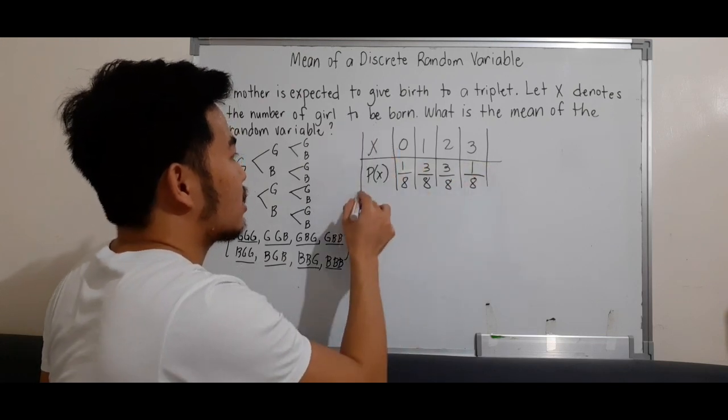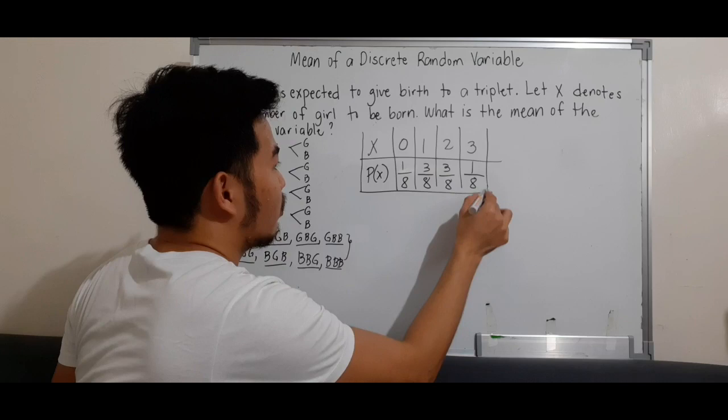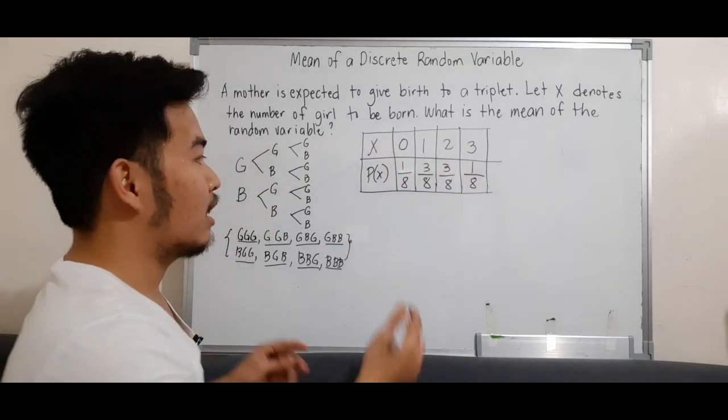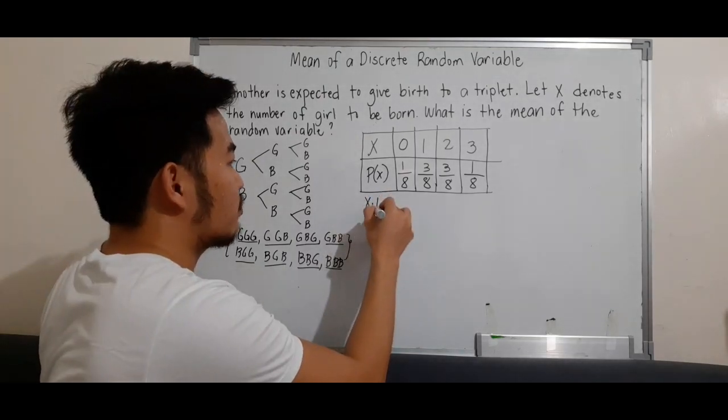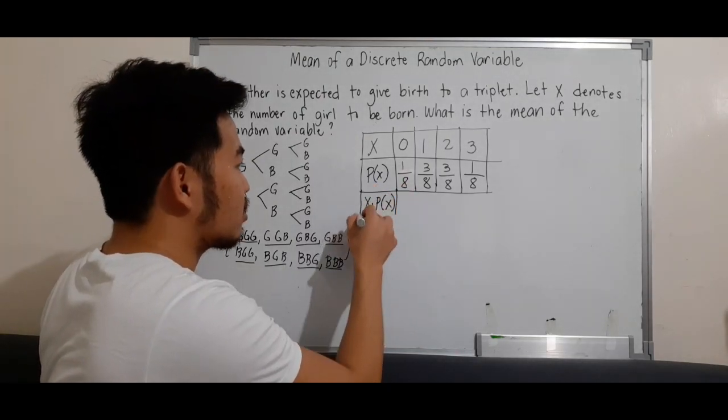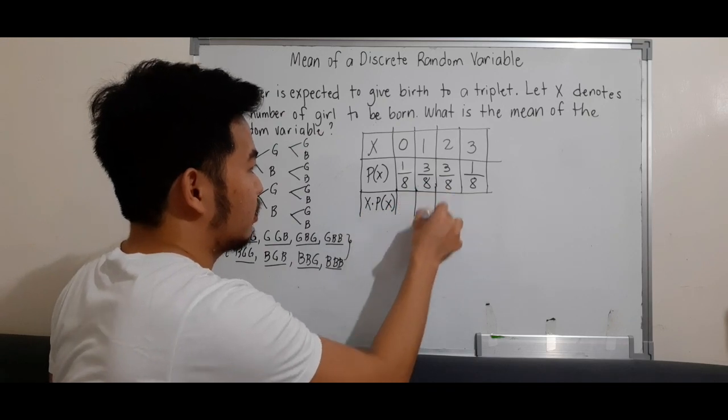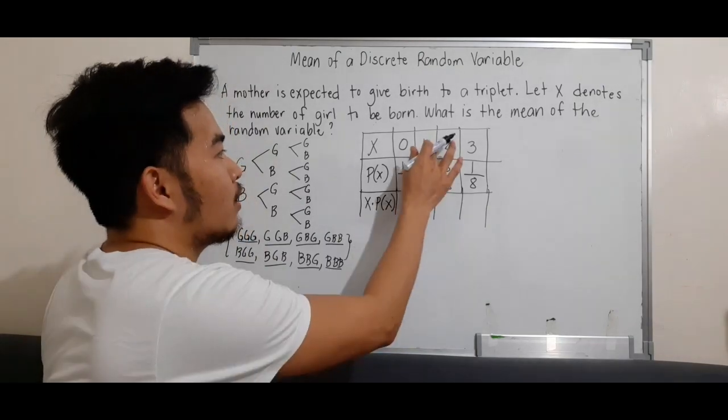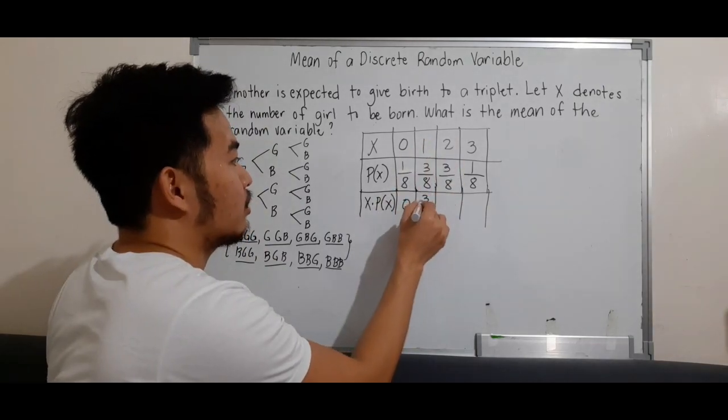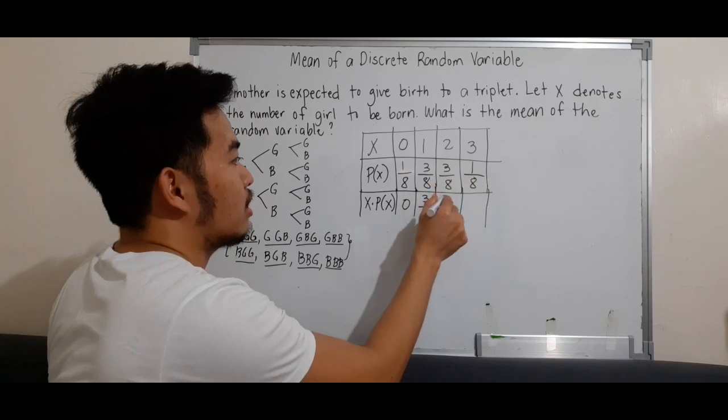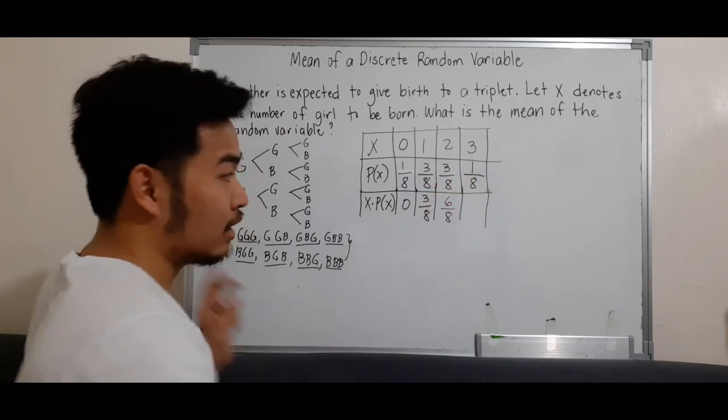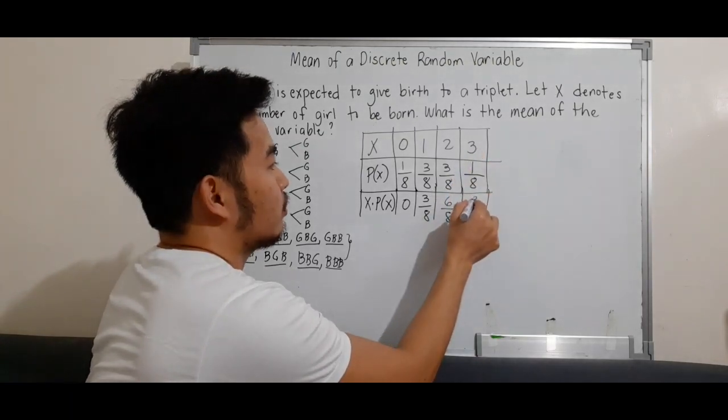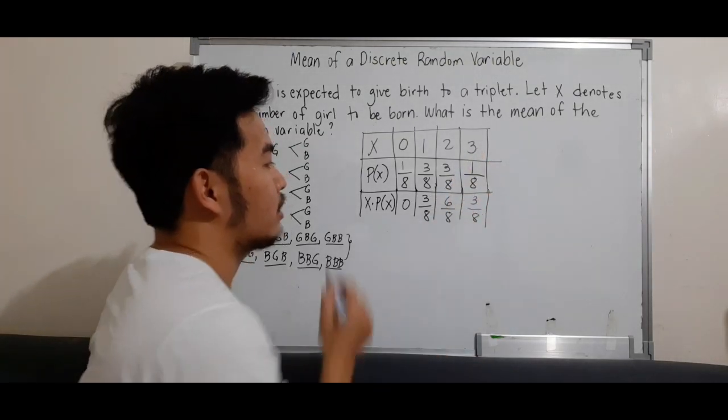So after constructing the probability distribution, we can now compute the expected value. We'll just create a row for x times probability of x. Then multiply these. 0 times 1/8 equals 0. 1 times 3/8 equals 3/8. 2 times 3/8 equals 6/8. We won't change to lowest terms yet. 3 times 1/8 equals 3/8.